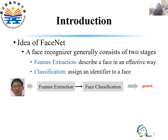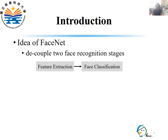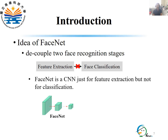Prior to detailing the idea of FaceNet, we first gain insight into previous face recognition. In general, a face recognizer consists of feature extraction and classification stages. The feature extraction stage describes a face in a discriminative way, while the classification stage assigns an identifier to a face based on extracted features. In deep learning, a convolutional neural network is generally used for feature extraction and a fully connected network for face classification. The main idea of FaceNet is to decouple the feature extraction and face classification stages — the proposed FaceNet is a CNN just for feature extraction, not for classification.